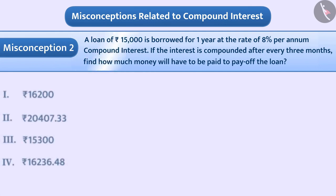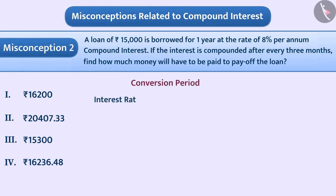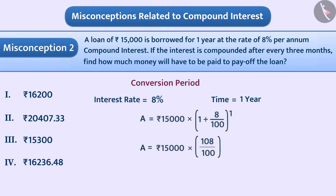While solving such questions, some children do not pay attention to the conversion period. They take the interest rate of 8% and time 1 year and solve the question, from which they get the answer of rupees 16,200. So they select option 1, which is a wrong answer.